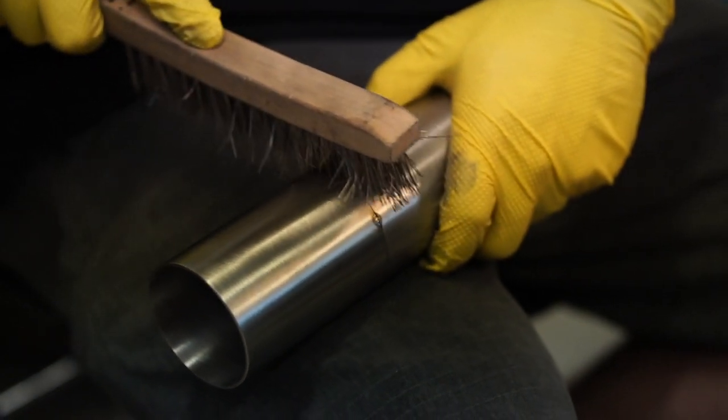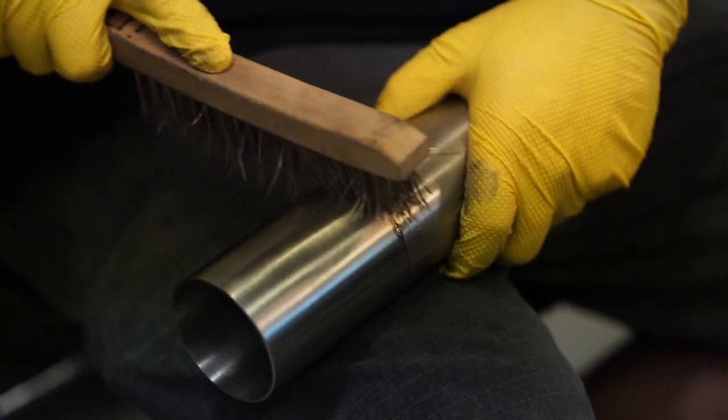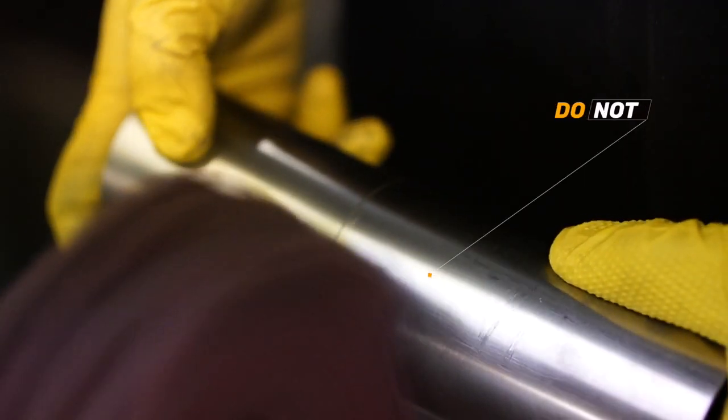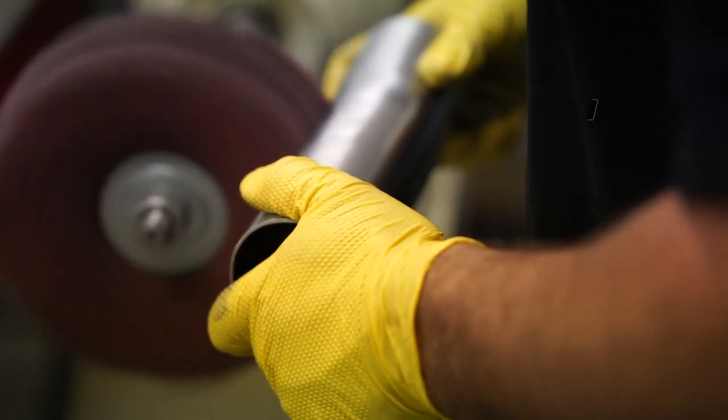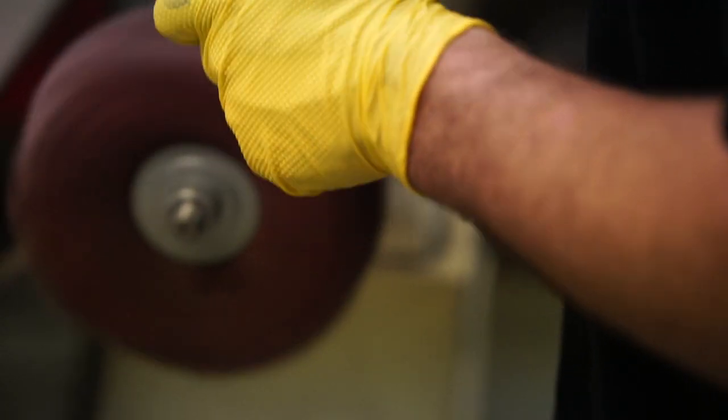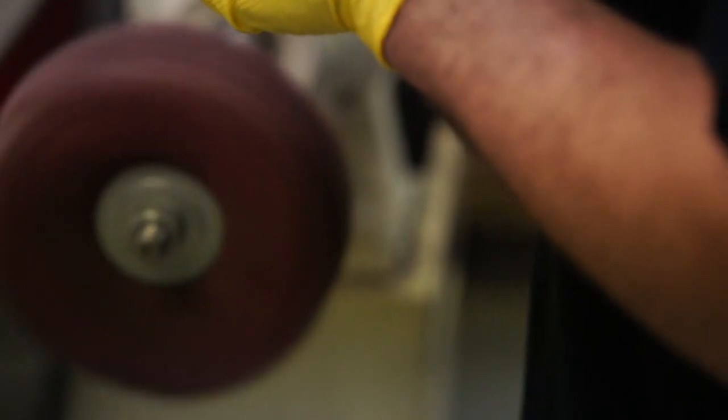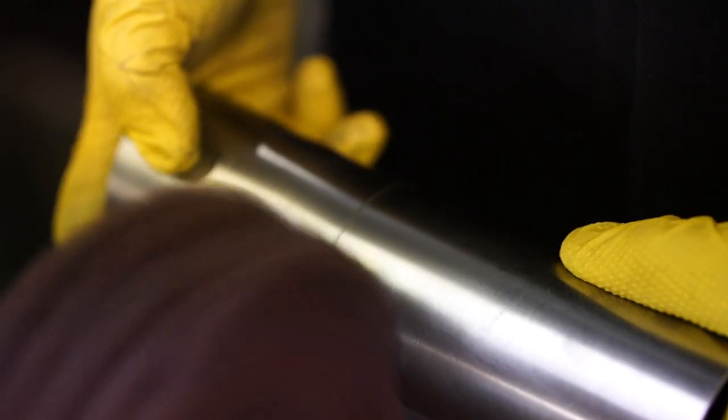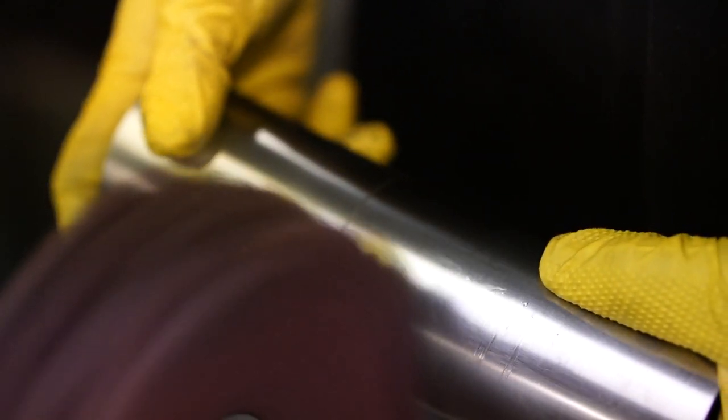And the one thing that I can tell you is do not scotch brite the weld joint after your part is tacked up if you can avoid it. What this is going to do is it's going to embed scotch brite fibers into that joint and unless they are taken out, which they are quite difficult to get out sometimes, they will leave contaminants on the surface of your weld.